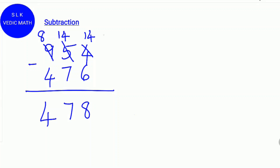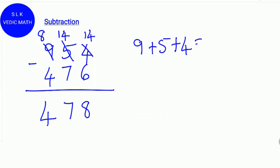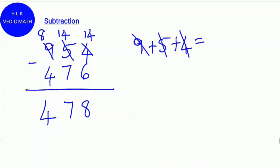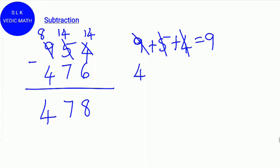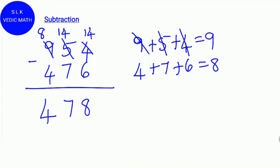Next, find the digital root for 954: 9 plus 5 plus 4. We cross out 9 because it is 9, and cross out 5 and 4 because they add up to 9. When all digits add up to 9, the digital root is always 9. For 476: 4 plus 7 plus 6 — 4 plus 7 is 11, and 11 plus 6 is 17, and 1 plus 7 is 8. So the digital root of 476 is 8.